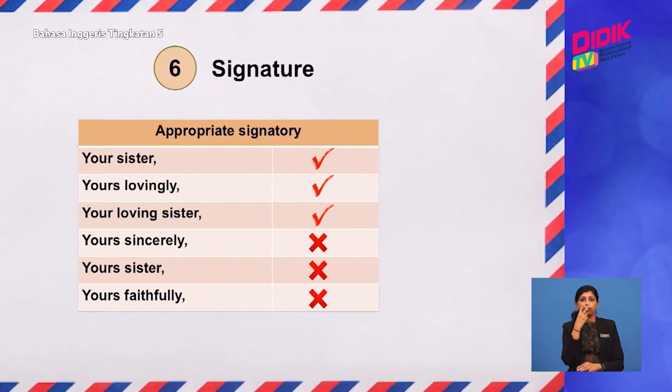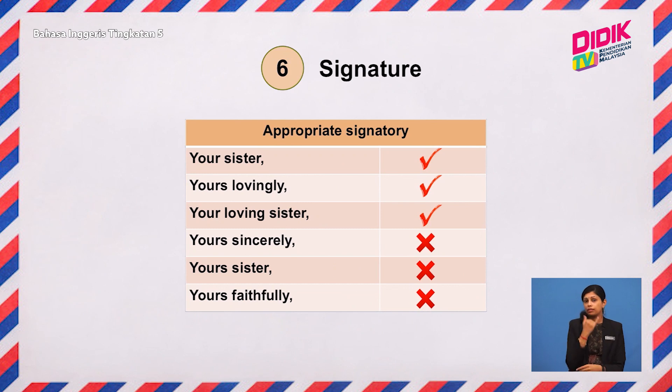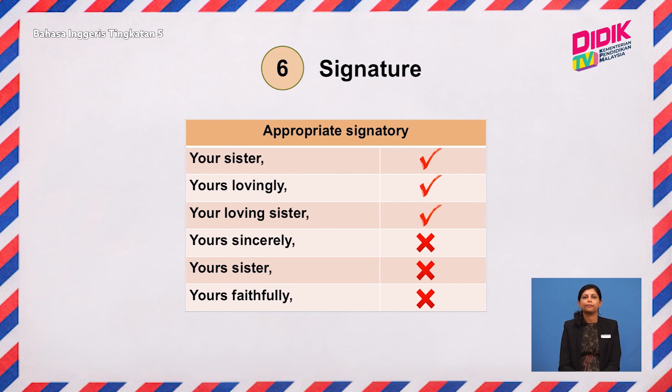At the bottom of the letter is the signature of the person who writes it. Choose an appropriate signatory based on the relationship of the writer and the recipient. You cannot use 'Yours sincerely' because this is not a letter to a friend. 'Your sister' is incorrect because there is an error — it should be written as 'Your sister.' 'Yours faithfully' is meant for a formal letter. So remember: identify the relationship. 'Yours sincerely' is not meant for family members. You can use 'Your sister,' 'Your brother,' or 'Your loving sister,' and then sign your letter.